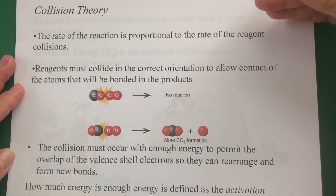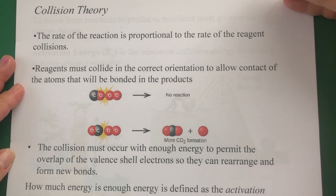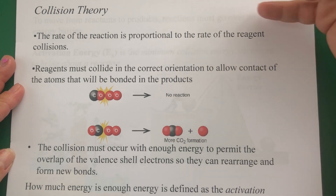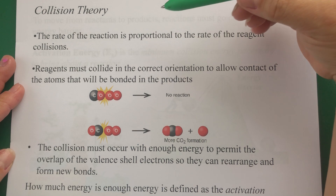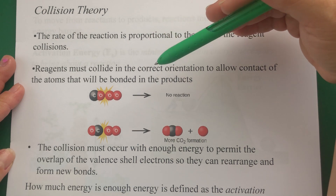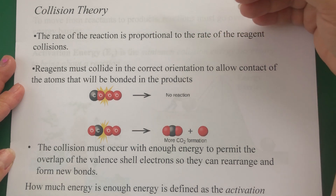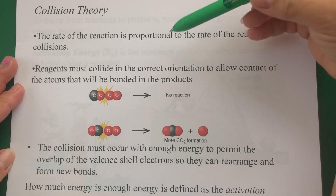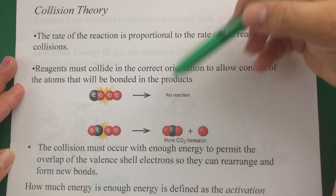We're going to continue in the next handout talking about equilibrium, which is the next part of a reaction. Both of those things depend on the reaction actually happening. So for you to get the rate of a reaction, or to get a reaction to happen at a certain speed, you have to have these requirements met.